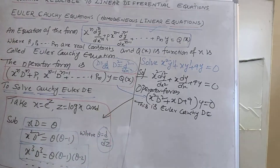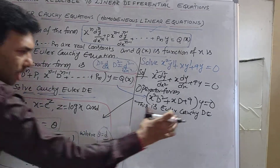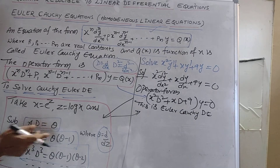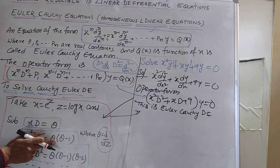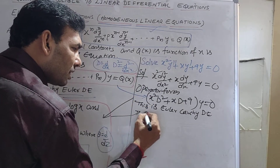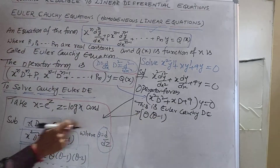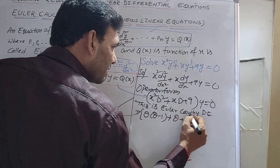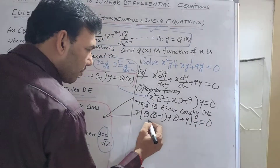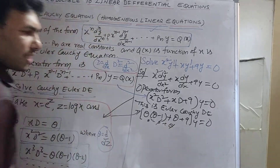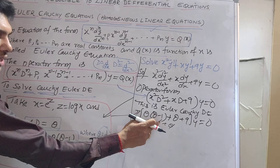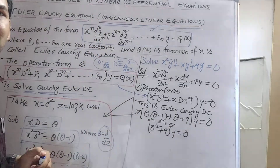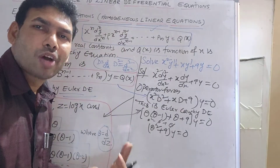Replace all terms using the substitutions. x = e^z, z = log(x), xD = θ, x²D² = θ(θ−1). So the equation becomes: θ(θ−1)y + θy + 9y = 0. Expanding: θ²y − θy + θy + 9y = 0, which simplifies to (θ² + 9)y = 0.